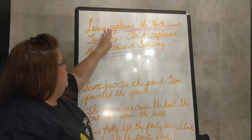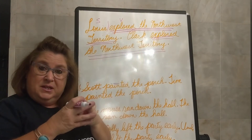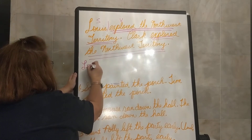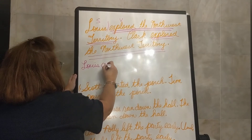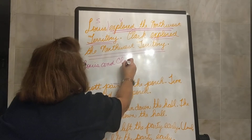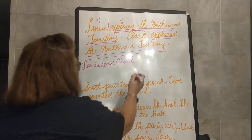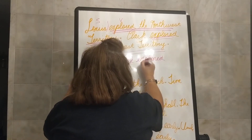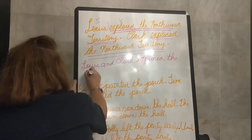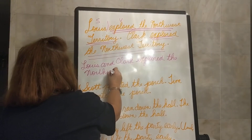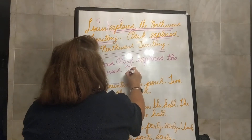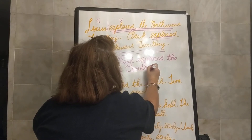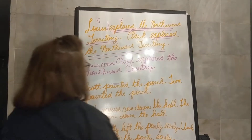So we could put Lewis and Clark in one sentence and then use our predicate explored the Northwest Territory. It would look just like this: Lewis and Clark explored the Northwest Territory. I try to write too fast and I get messy — kind of like y'all sometimes, huh? Explored the Northwest Territory.